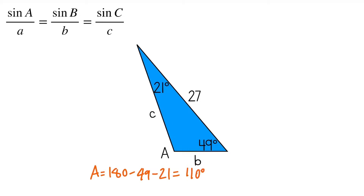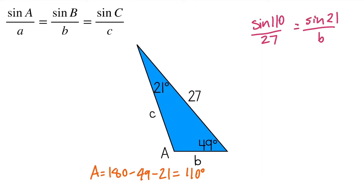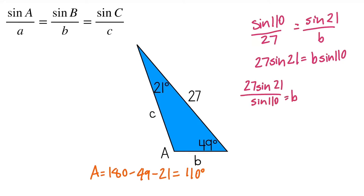I'll solve for B first. Setting up my ratio: sine of 110 degrees over 27 is equal to sine of 21 degrees over B, because 21 is opposite of side B. Cross multiplying, 27 sine 21 equals B times sine 110. Dividing both sides by sine 110, I get B is approximately 10.30.